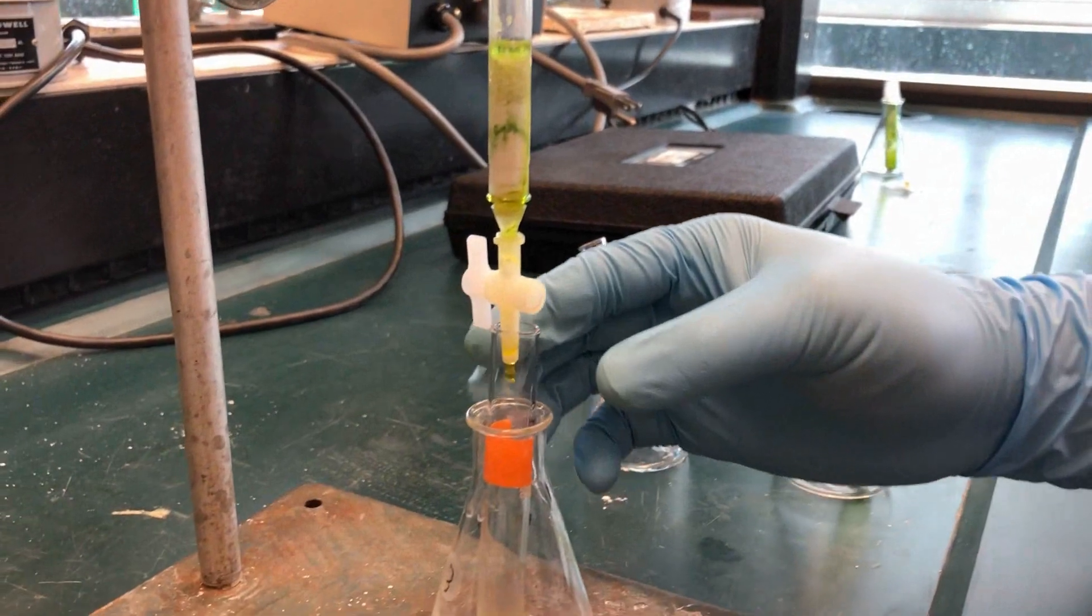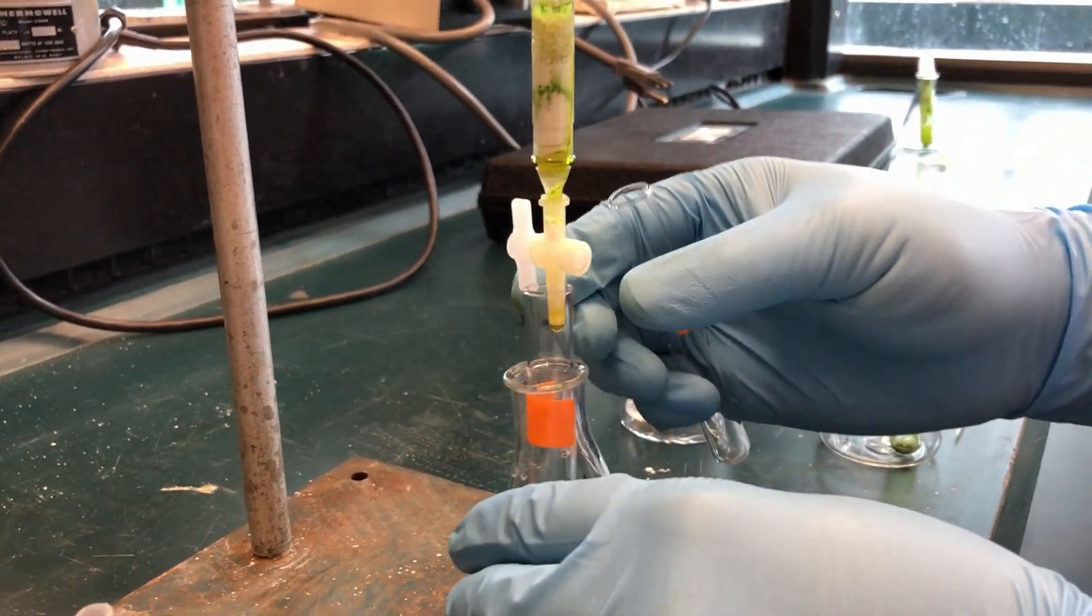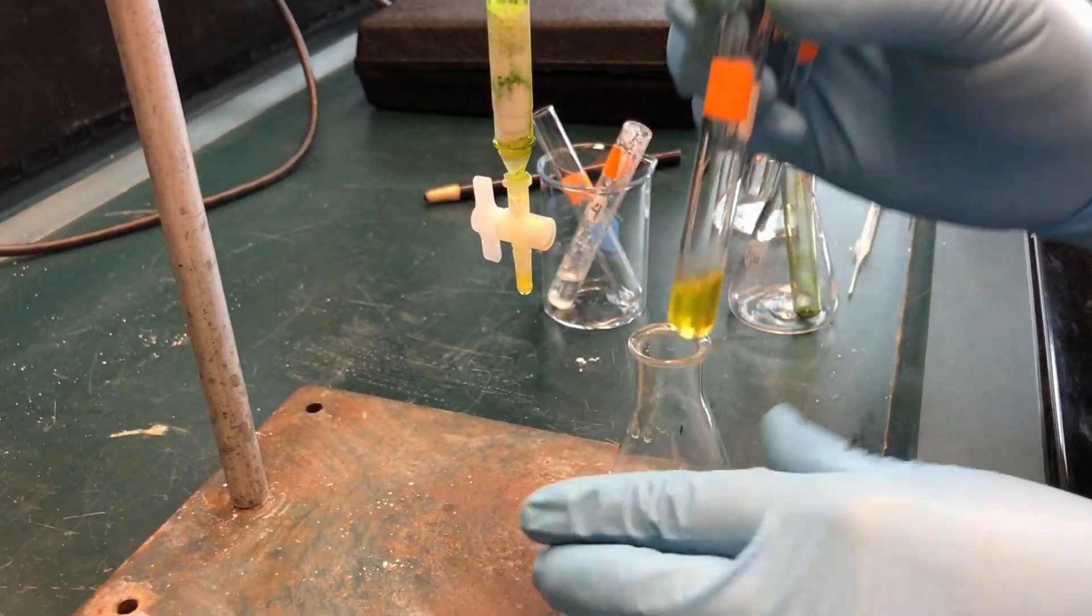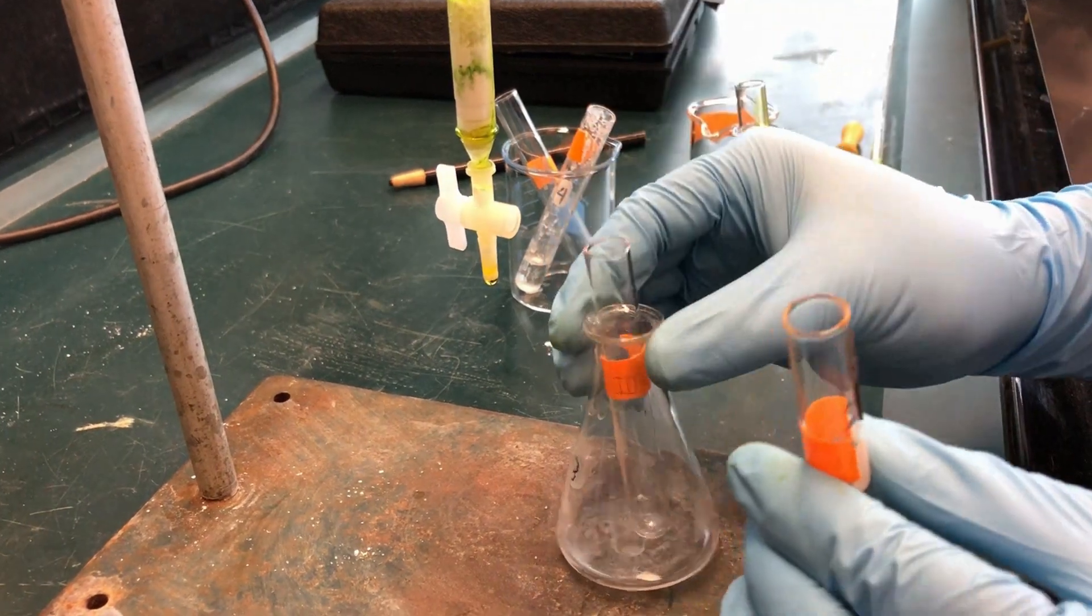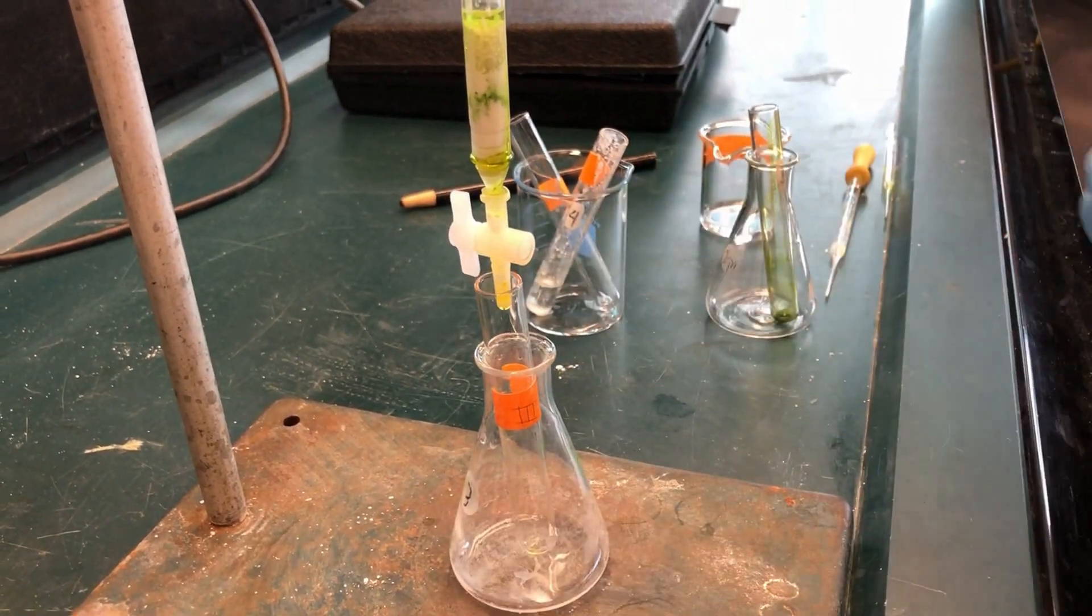After you have collected the yellow pigment, switch to test tube 3 to collect the intermediate between the green and yellow pigment until you can see the green band moving down the column.